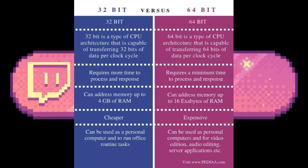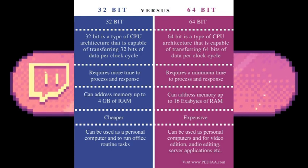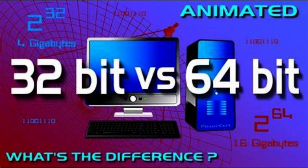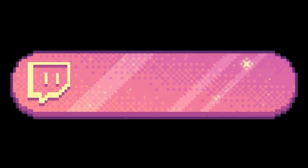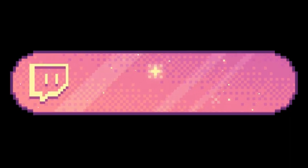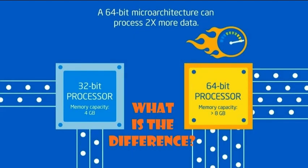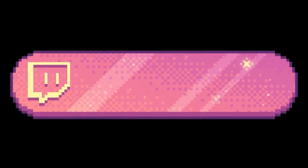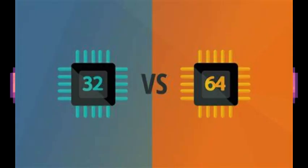In computing, 32-bit and 64-bit refer to the type of central processing unit, operating system, driver, software program, etc., that utilizes that particular architecture. The primary difference between the two is the amount of memory they can access. 32-bit systems can access up to 4GB of RAM, while 64-bit systems can access much more than that.